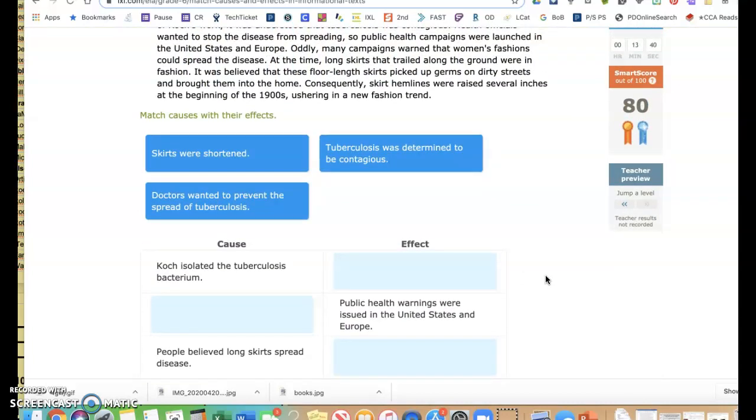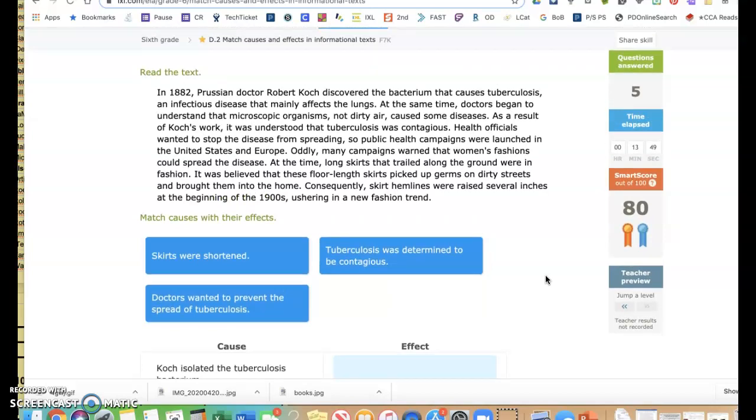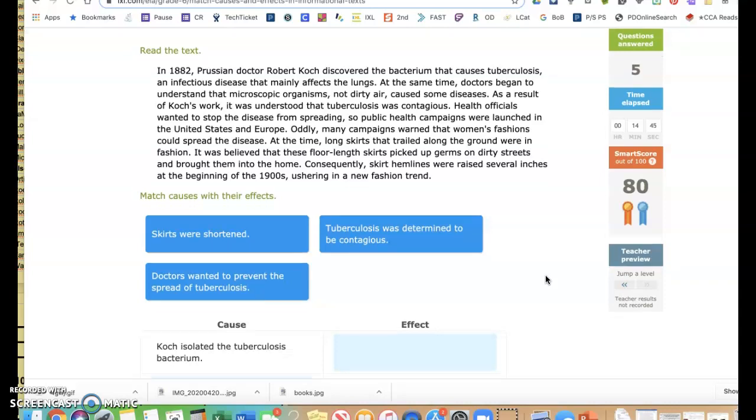Sometimes it'll even do this, where you're not looking just for causes or effects. You're looking at kind of a combo. In 1882, Prussian doctor Robert Koch discovered the bacterium that causes tuberculosis, an infectious disease that mainly affects the lungs. At the same time, doctors began to understand that microscopic organisms, not dirty air, cause some diseases. As a result of Koch's work, it was understood that tuberculosis was contagious. Health officials wanted to stop the disease from spreading, so public health campaigns were launched in the United States and Europe. Oddly, many campaigns warned that women's fashions could spread the disease. At the time, long skirts that trailed along the ground were in fashion. It was believed that these floor-length skirts picked up germs on dirty streets and brought them into the home. Consequently, skirt hemlines were raised several inches at the beginning of the 1900s, ushering in a new fashion trend.